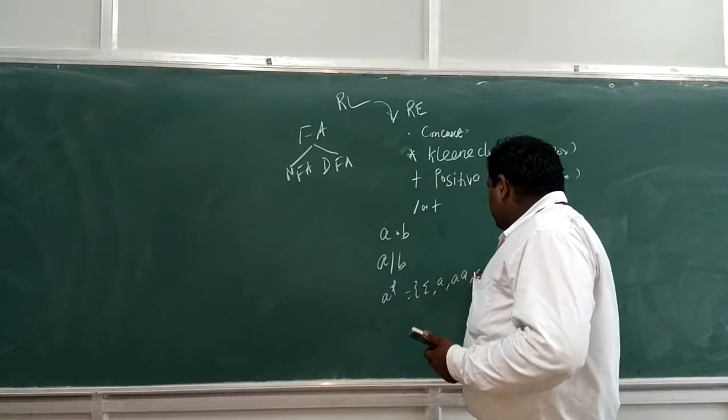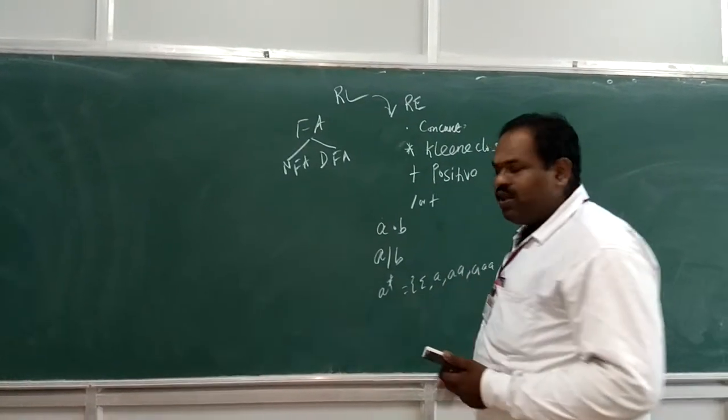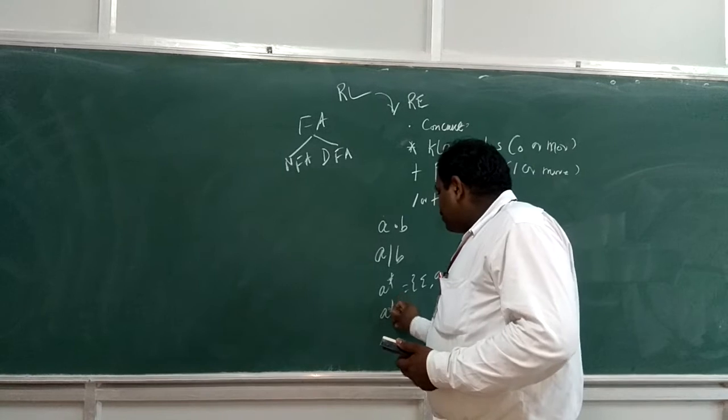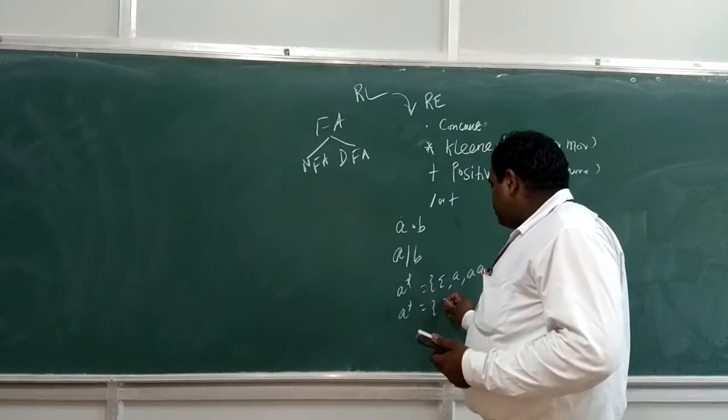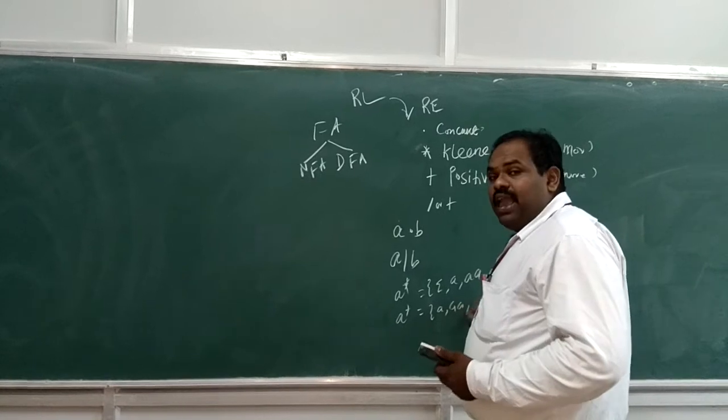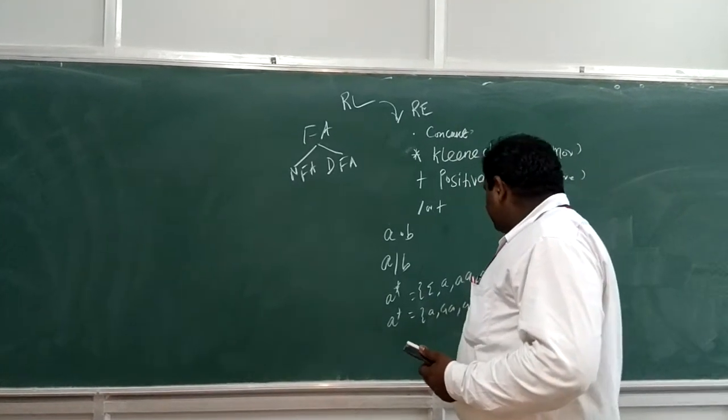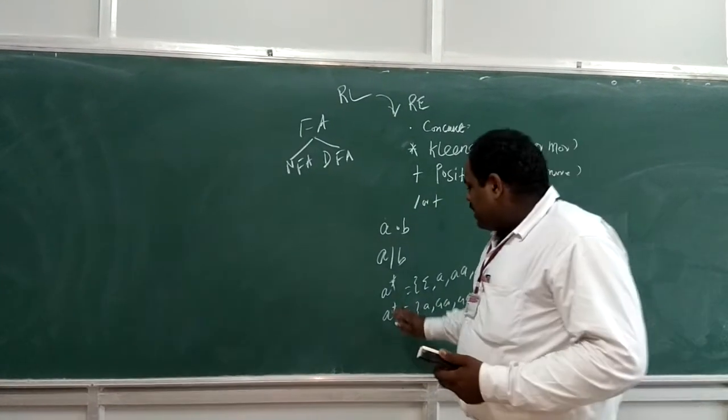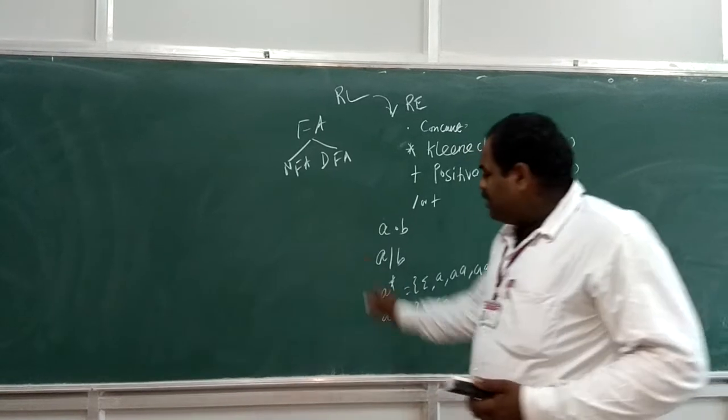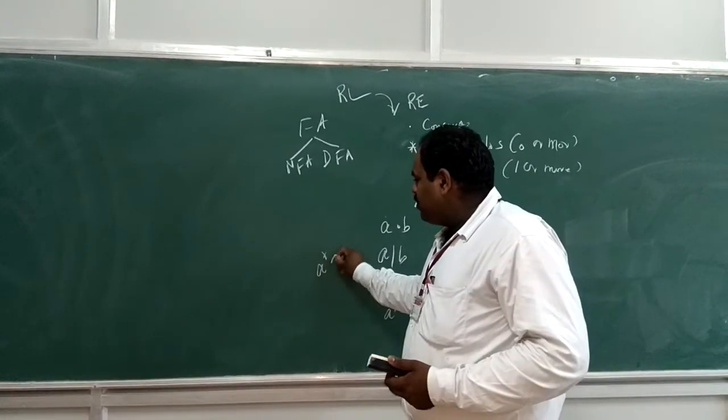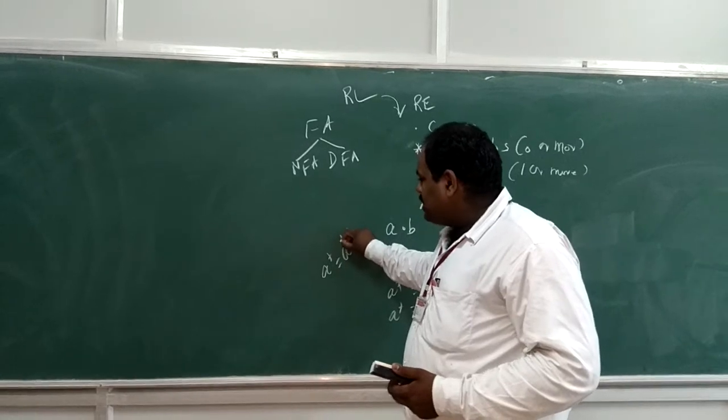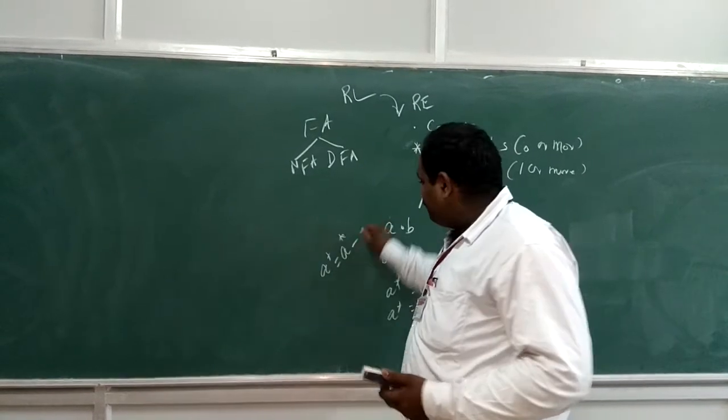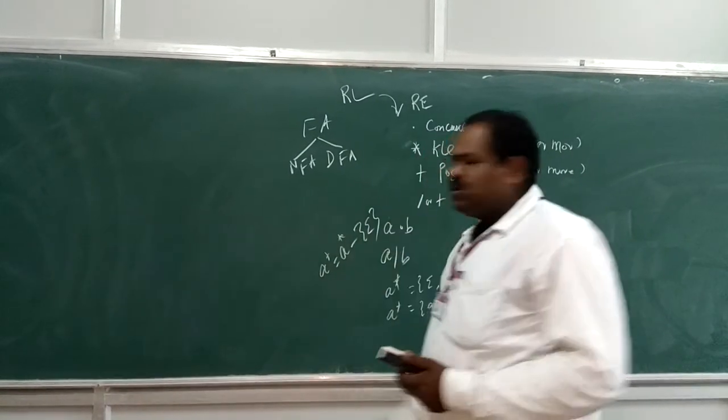Then A, then A, A. Then two times of repetition. Then A plus, A positive closure. The A plus can be written in terms of A plus is equal to A star, then concatenated with A. This is also equal.